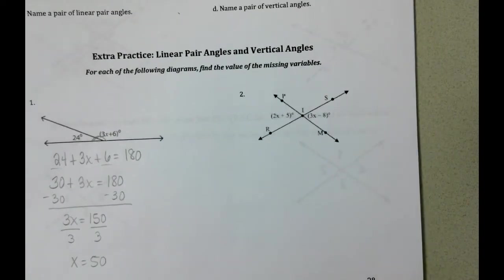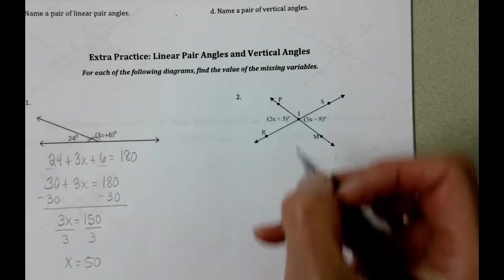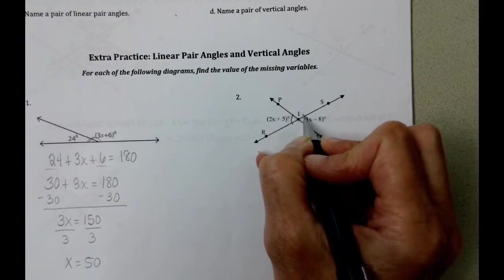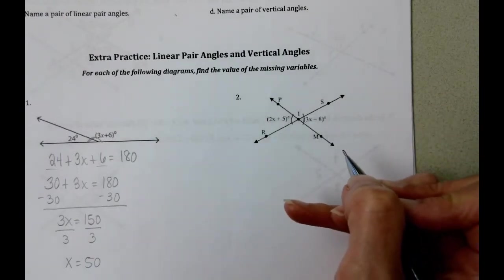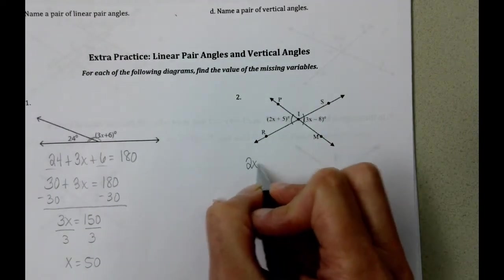So our second example, our second problem is a problem that's vertical angles. They're opposite angles. And what we know about vertical angles is that this angle and this angle are opposite. So there's the opposite angles concept. And we've got a value for each of them.